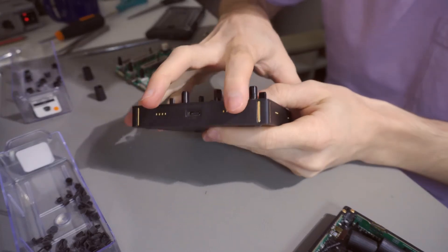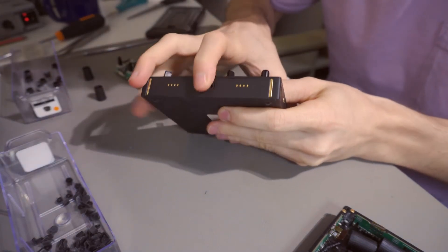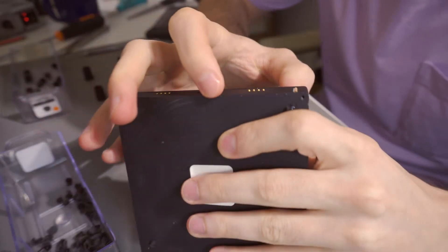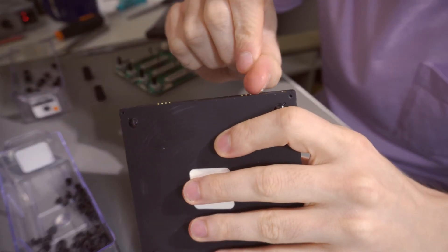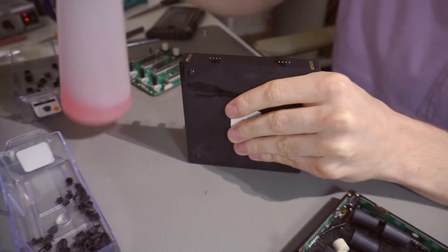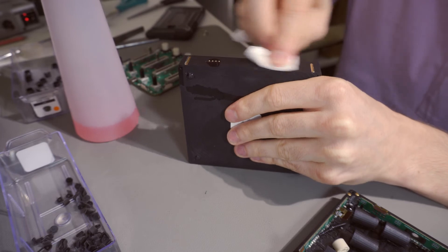Let's take a look at the connectors, heart of the modularity. Dust, small particles, or flux from soldering can affect the reliability of the connected modules. Use electronic cleaner directly on the connectors and a cloth which doesn't leave small dirt behind.